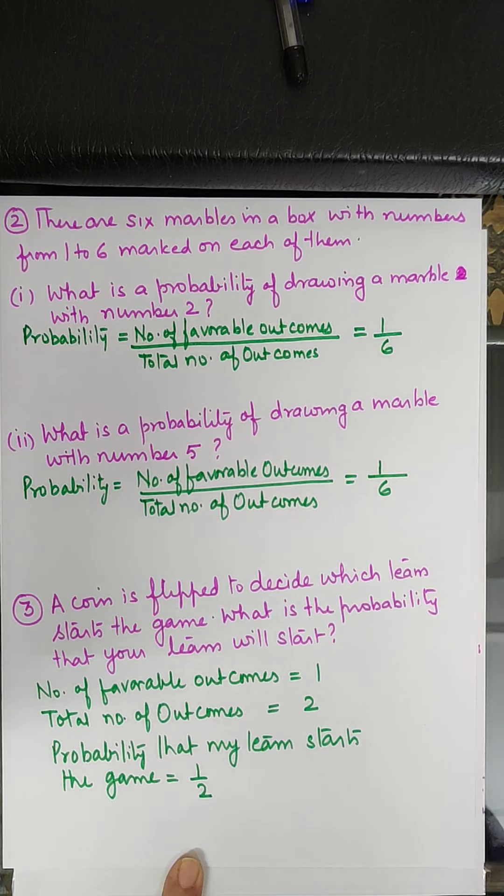Next part: What is the probability of drawing a marble with number 5? Again using the same formula — probability = number of favorable outcomes upon total number of outcomes. There is only one marble with number 5, so favorable outcomes = 1, total marbles = 6. Probability = 1/6.